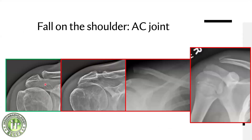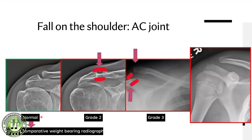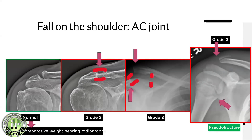Here are the AC joint grades: the normal AC joint shows no widening. When you see widening without load bearing, the AC joint capsule has ruptured - that's grade 2. In grade 3, both the superior and inferior capsule of the AC joint have ruptured, and additionally the coracoclavicular ligament ruptures, causing superior migration of the clavicle. Grading systems go up to six, but these three are the most important. Occasionally you'll see AC separation with a bony avulsion from the distal clavicle.